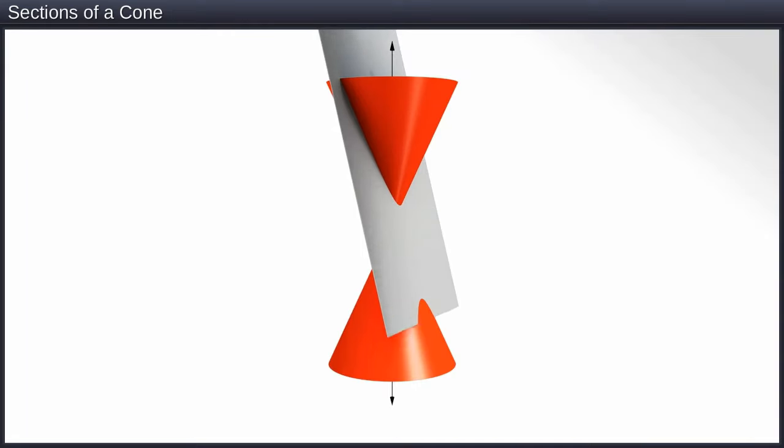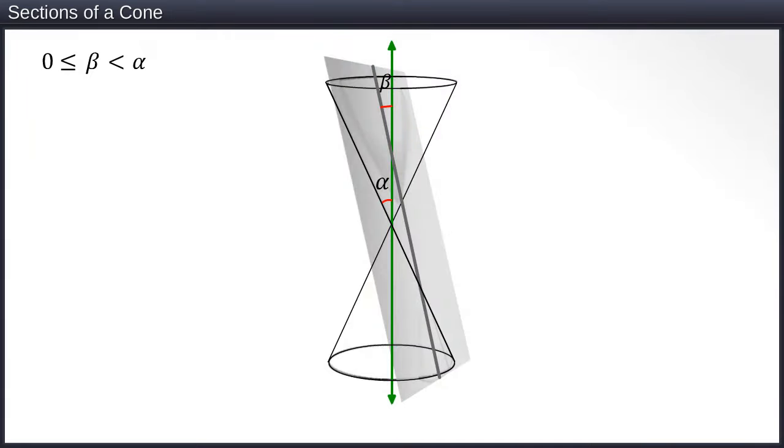If the plane intersects the cone such that angle beta is less than angle alpha and greater than or equal to zero, the plane cuts across both nappes of the cone. And the resulting conic section is a hyperbola.